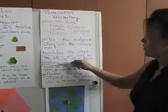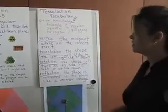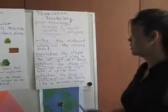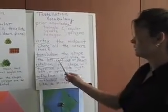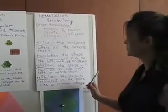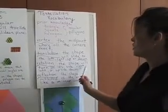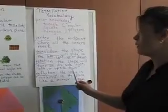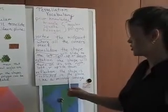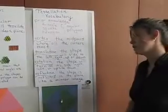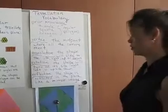And then the three different aspects of tessellation are the translation, so the shape will actually slide left, right, up, or down. Rotation, the shape will turn on its side, either right, left, or upside down. And then the reflection, where the shape is reflected in the plane, similar to a mirror image.